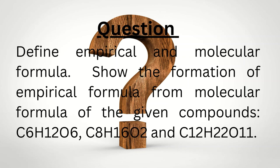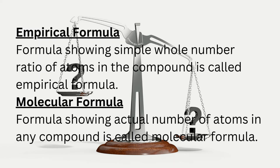Define empirical and molecular formula. Show the formation of empirical formula from molecular formula of the given compounds: C6H12O6, C8H16O2, and C12H22O11. Empirical formula: formula showing simple whole number ratio of atoms in the compound is called empirical formula. Molecular formula: formula showing actual number of atoms in any compound is called molecular formula.